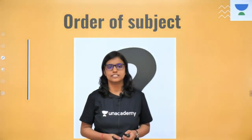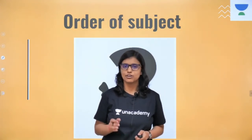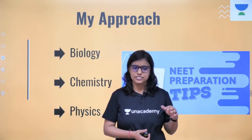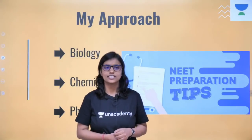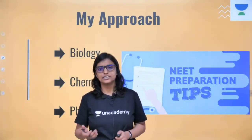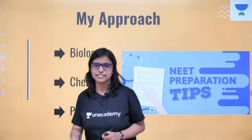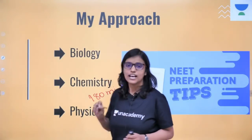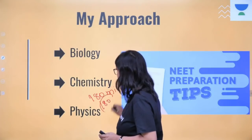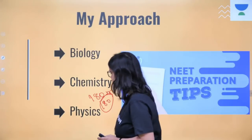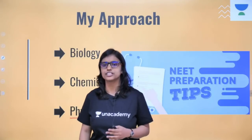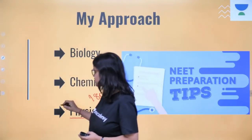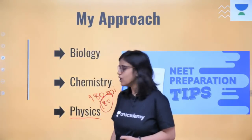Now I will tell you what should be the order of subjects. There are three subjects in the exam: biology, chemistry, and physics. When we go to the paper our mind is fresh. I used to do physics first — in the NEET exam we have 180 minutes and 180 questions. I would first attempt physics and if a question seemed difficult, I would just encircle or star-mark it and come back to solve it later.